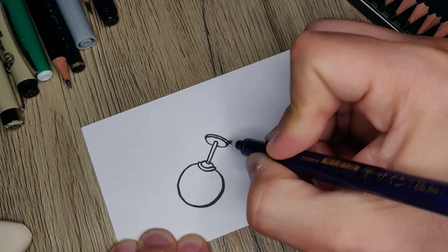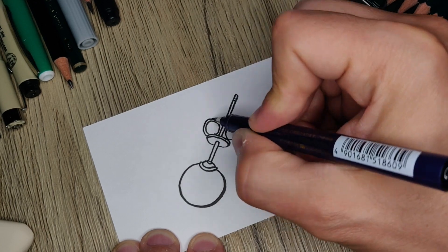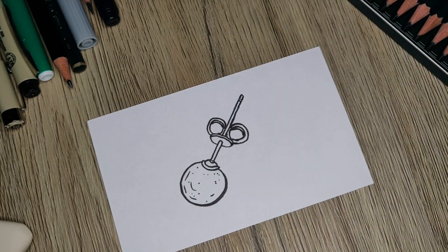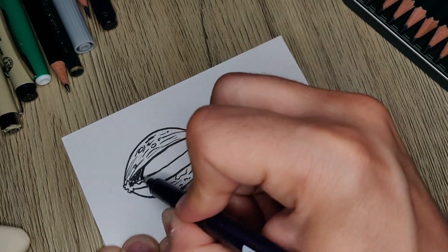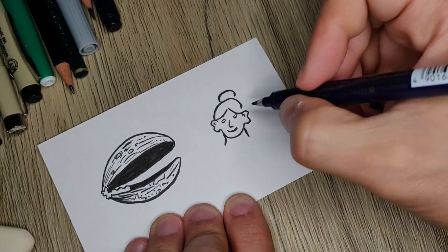This is called a pearl earring. This is a real object that exists in this universe. Pearl earrings require two very different life forms to exist. The first is called a mollusk, and the second is called a human.